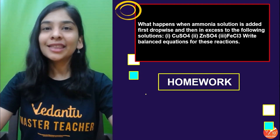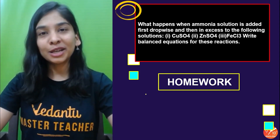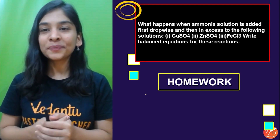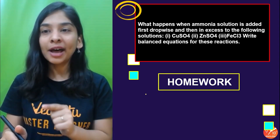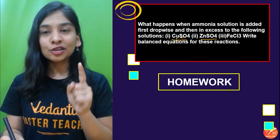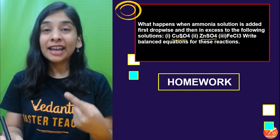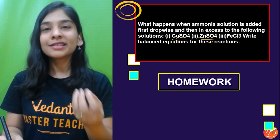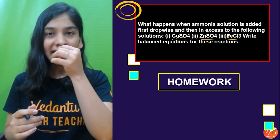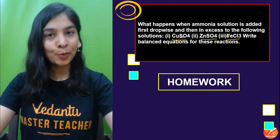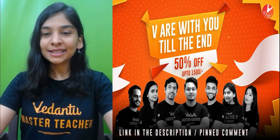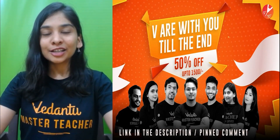Your homework for this class: Take ammonium hydroxide and add it drop by drop, then in excess, to copper sulfate, zinc sulfate, and FeCl₃ solutions. For copper and zinc ions, they will be soluble in excess alkali giving water-soluble coordination complexes. For FeCl₃, you'll get reddish brown ferric hydroxide precipitate. Write the reactions for all three and post your answers in the comment section.